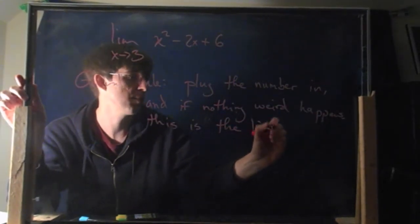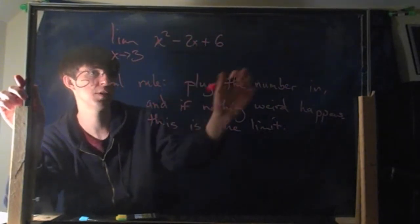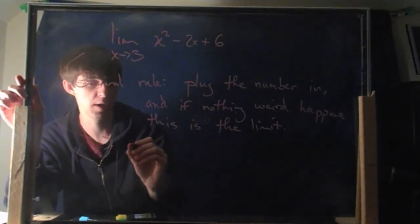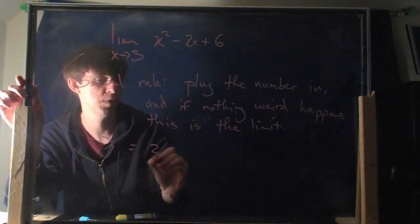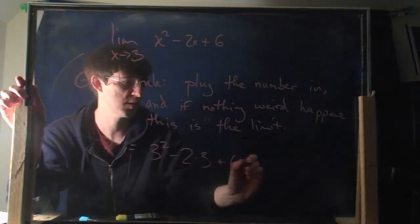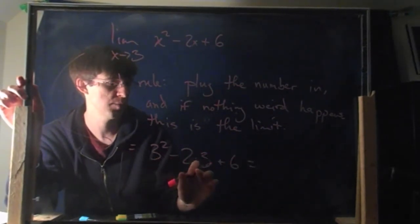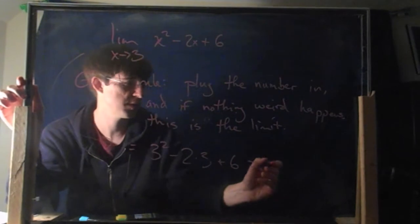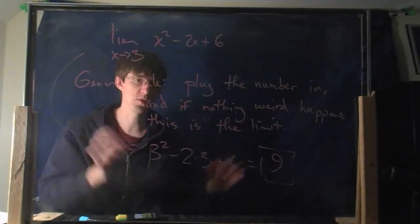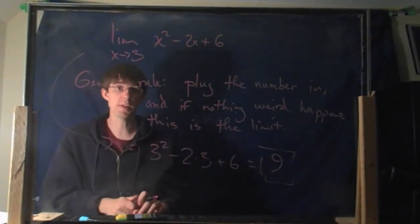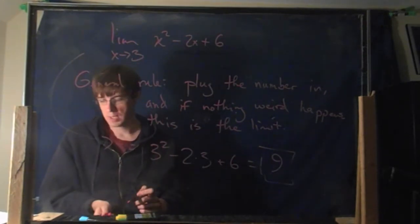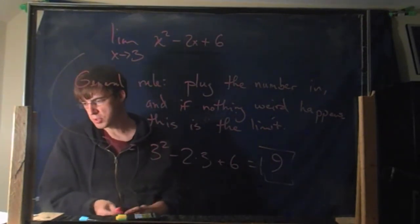In this example, I'm just going to plug the 3 in, and you get 3 squared minus 2 times 3 plus 6, which is 9 minus 6 plus 6, which is 9. And that's your answer — that turns out to be the correct answer. That is the limit of this function as x approaches 3.